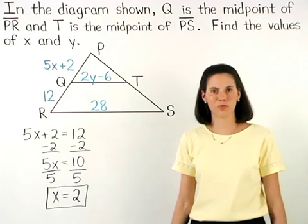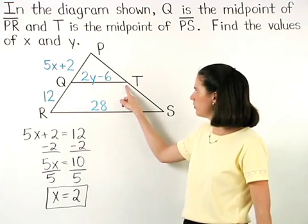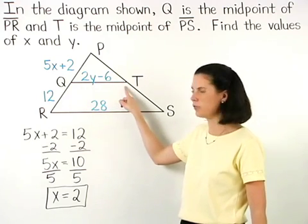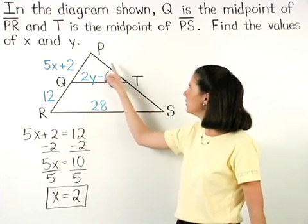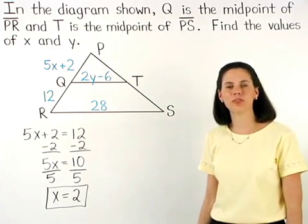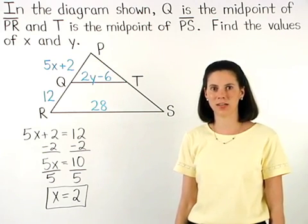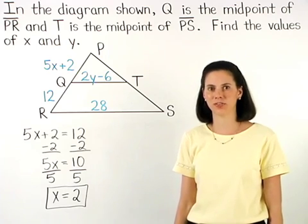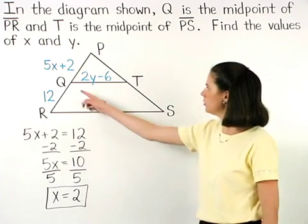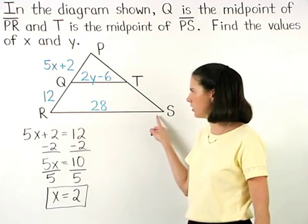To find the value of Y, notice that segment QT joins the midpoints of two of the sides of triangle PRS. And remember that if a segment joins the midpoints of two sides of a triangle, then it measures half the length of the third side. So the length of segment QT equals half the length of segment RS.